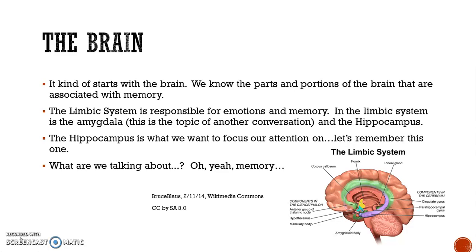It all starts with the brain. We know the parts and portions of the brain that are associated with memory. The limbic system is responsible for emotions and memory. In the limbic system there is the amygdala, which is a topic for another conversation, and the hippocampus.